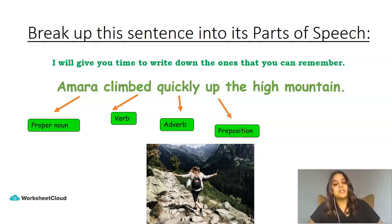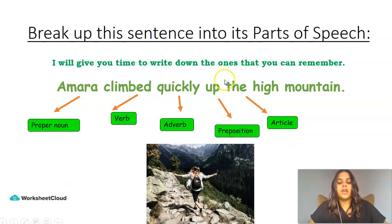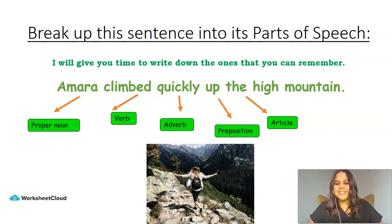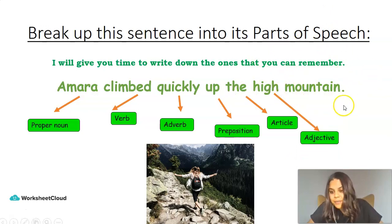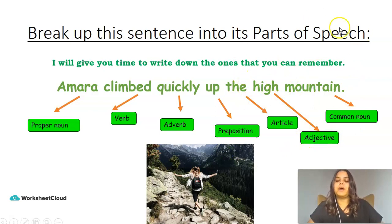Up is a preposition — it's telling us where Amara is climbing. She's not climbing down or under or over, she's climbing up the high mountain. Over here we have our article, 'the.' Again, if you wrote 'definite article,' great — you are a step ahead. But for now we're just going to call it article. 'High' is an adjective because it's describing the mountain, and lastly 'mountain' is a common noun. The word 'high' is telling me more about the word mountain, the noun mountain.